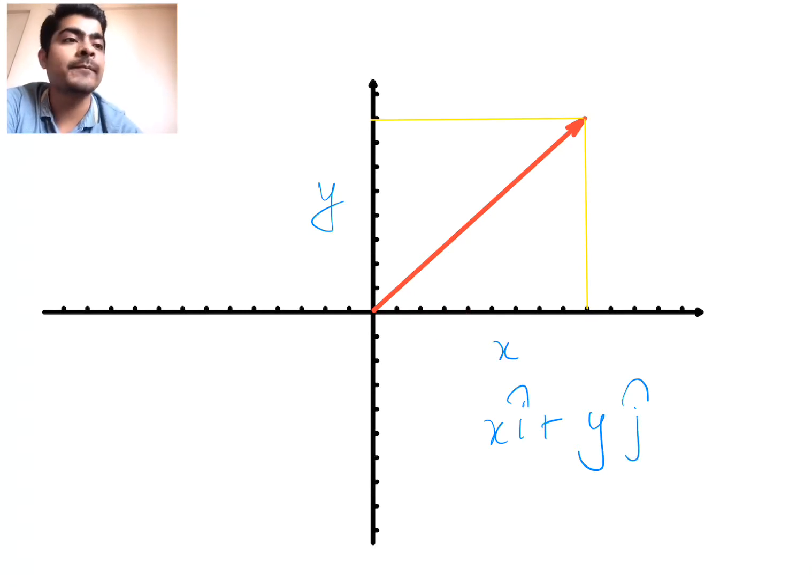This is your right angle triangle, so the base is x, the height is y. So how much is the length of the hypotenuse? The length of the hypotenuse will be given by under root of x squared plus y squared, and that is actually the length of the vector itself.